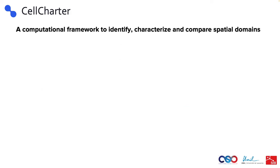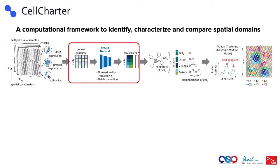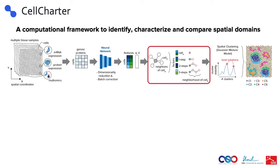This pushed us to develop Cell Charter, a framework to identify, characterize, and compare spatial domains. The workflow of our spatial clustering method starts from multiple slides of spatial omics data, where every point is a cell or a spot containing multiple cells, and for every cell or spot we have molecular information such as RNA, protein, or even multi-omics data. We then perform classical dimensionality reduction and batch effect removal, and then use the spatial information to perform what we call a neighborhood aggregation step, which incorporates the molecular information of neighbors into the cell data. This neighborhood aggregation is fairly simple, but that's what makes it extremely scalable.